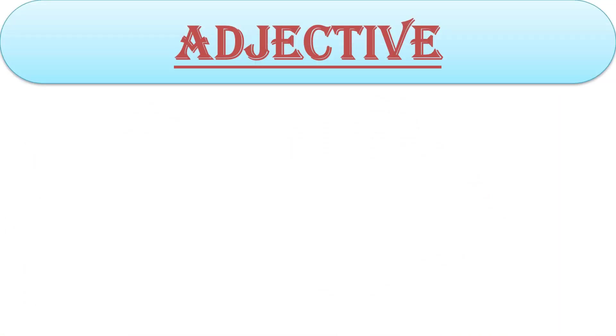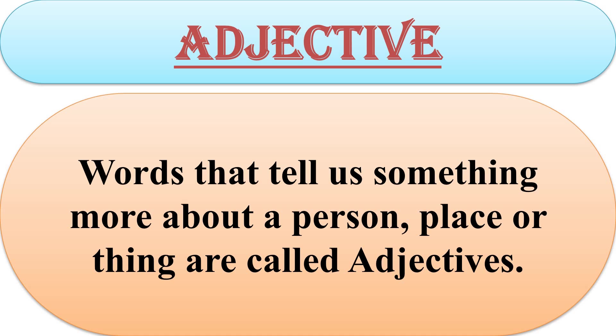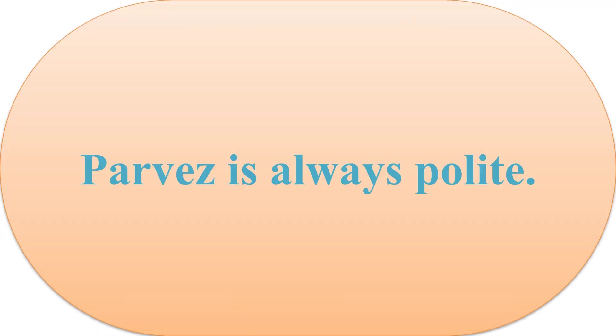Definition: Words that tell us something more about a person, place or thing are called Adjectives. For example, 'Purpos is always polite' — the word 'polite' tells us something about the noun, describing its quality. So, it is an Adjective.